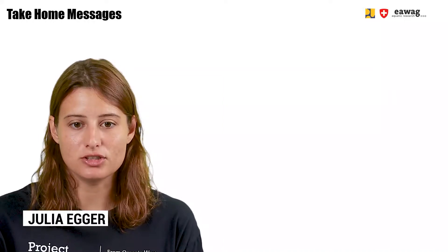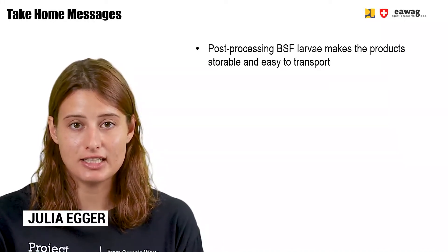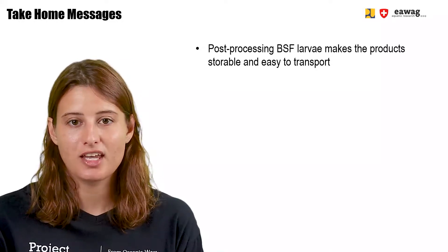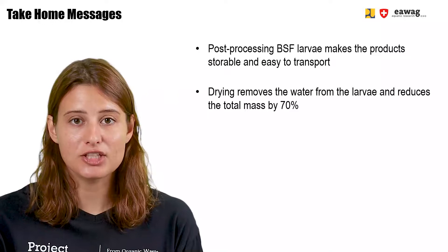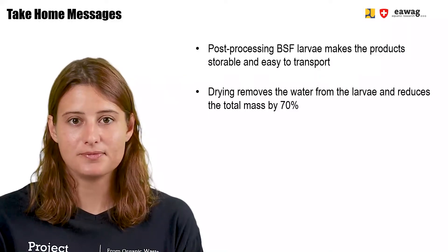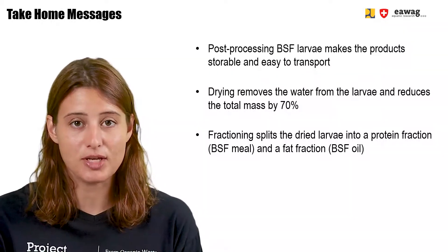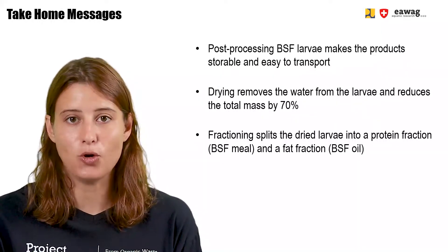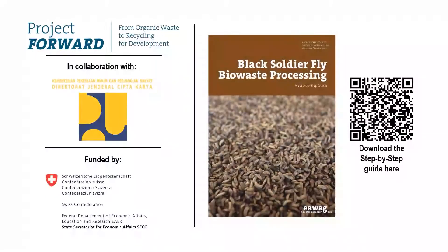Now we are at the end of this module. We saw that post-processing BSF larvae makes this product durable and easy to transport. Drying removes the water from the larvae and reduces its mass by 70%. Fractioning splits the dried larvae into a protein fraction, the BSF meal, and a fat fraction, the BSF oil. Thank you for watching this module, part of the e-learning video series on BSF BioWaste Processing. More information can be found in the BSF step-by-step guide, which you can download through the QR code shown here. Both of these materials were part of the Forward Project by EWAC in collaboration with the Ministry of Public Works in Indonesia, funded by SECO, the Swiss State Secretariat for Economic Affairs.